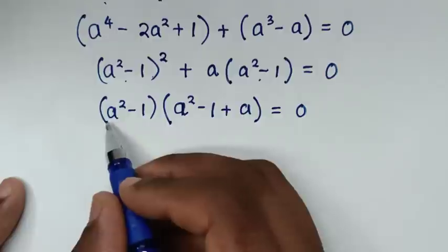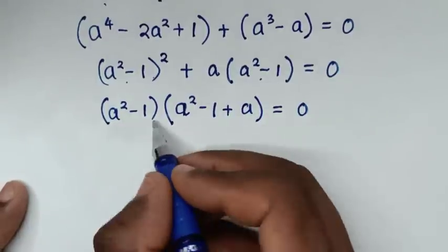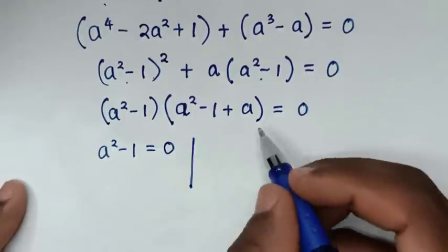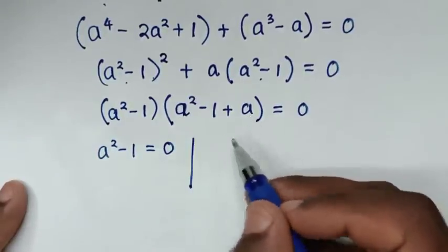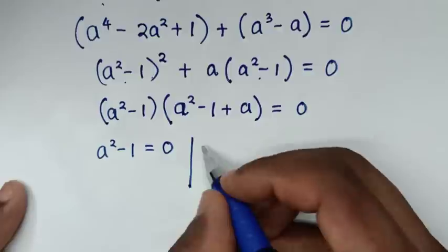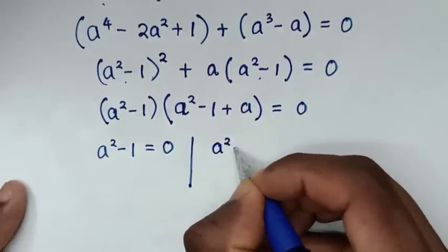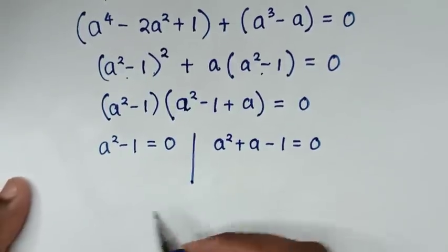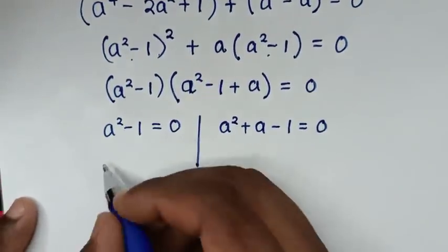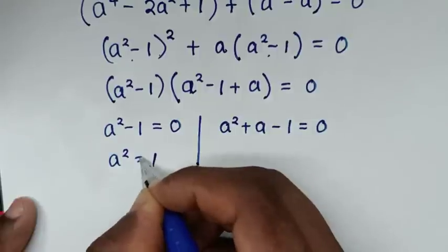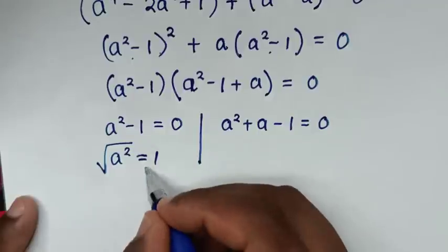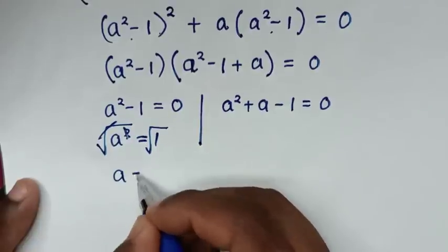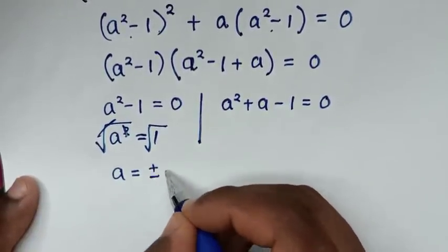From here we have two solutions. The first solution is a square minus 1 equals 0. From here, we take negative 1 to this side: a square equals 1. We apply square root on both sides, so a is equal to square root of 1, which is plus or minus 1.